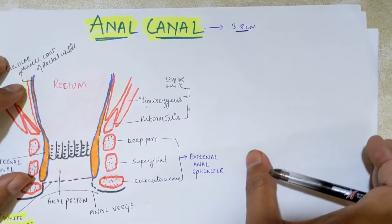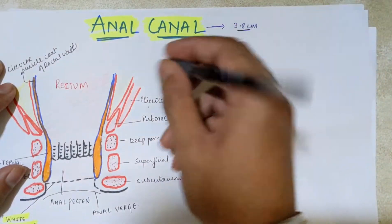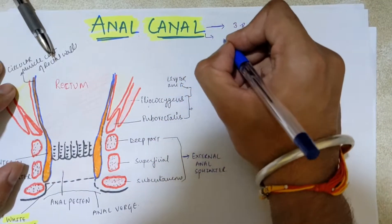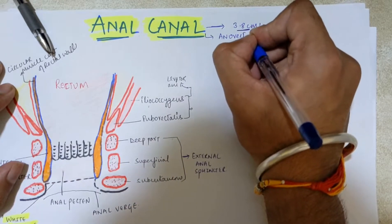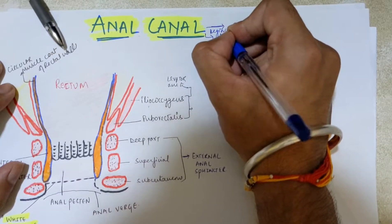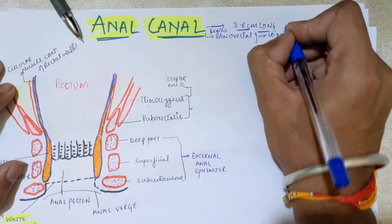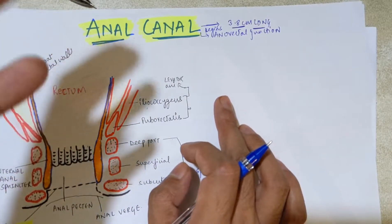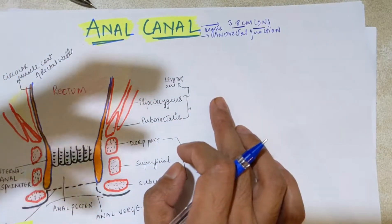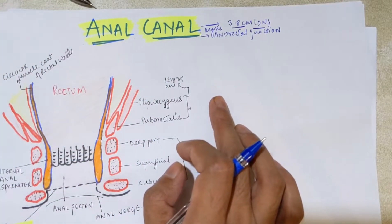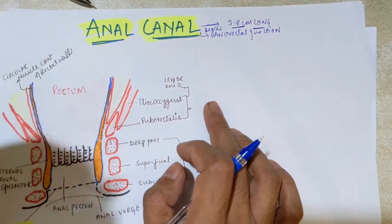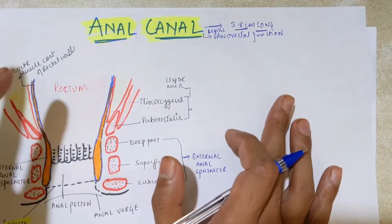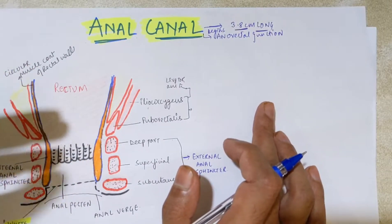The anal canal is around 3.8 centimeters long, beginning from the anorectal junction. Like the rectum, it does not contain the characteristic features of the large intestine — taeniae coli, haustra coli, and epiploic appendages are not present in the anal canal. The anal canal is surrounded by internal and external anal sphincters.